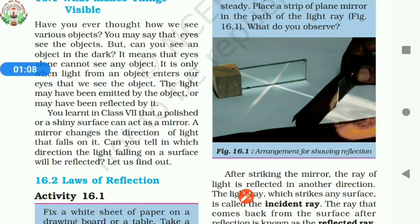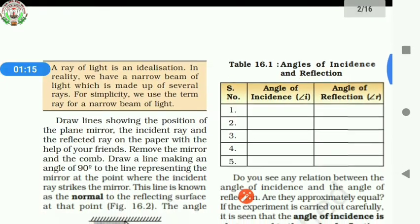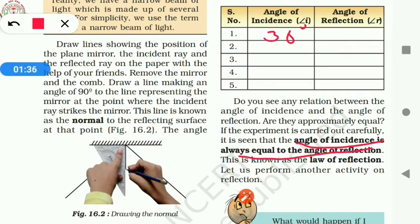There are two laws of reflection. According to the first law of reflection, the angle of incidence is always equal to the angle of reflection. That means, suppose the angle of incidence is 30 degrees, then the angle of reflection will also be 30 degrees. If the angle of incidence is 40 degrees, the angle of reflection will also be 40 degrees.